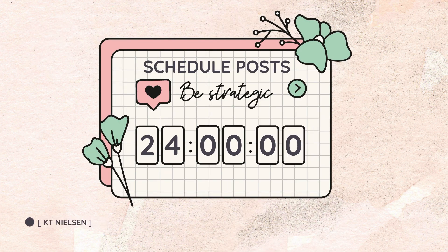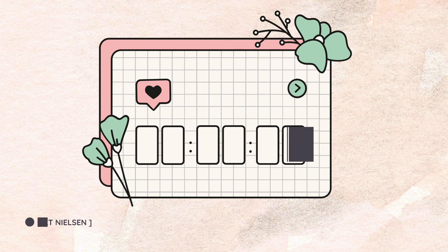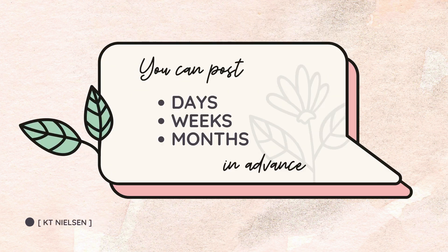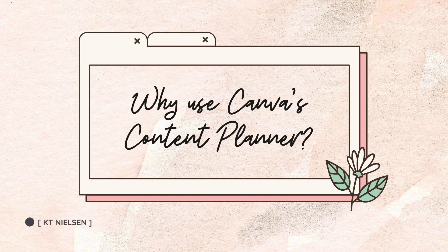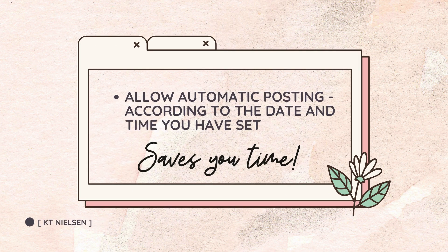You can schedule the right post at the right time. It's very crucial for you to post when your engagement is high, meaning when your followers or your audience are actually looking at your profile and checking out your content. You can post days in advance, even weeks, and what's most exciting, you can post even months in advance. If you need to make a change, just pause, edit, and then schedule again. Why use Canva's Content Planner? It allows automatic posting, and you can post according to the date and time you have set.